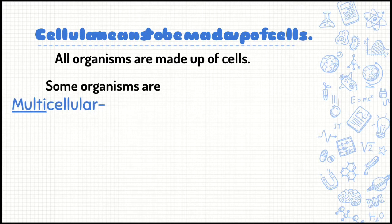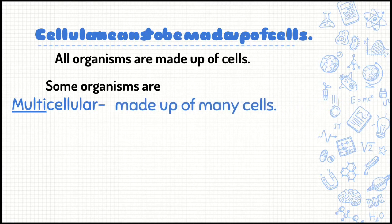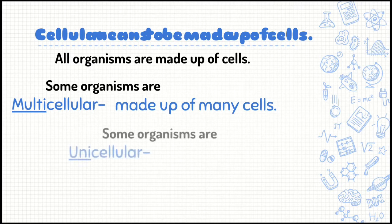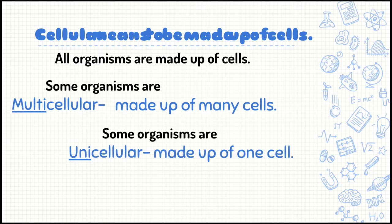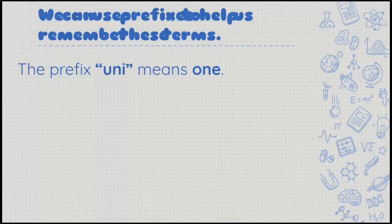All organisms are made up of cells. Some organisms are multicellular — this means they're made up of many cells. Multi means many, or more than one. And some organisms are unicellular. The prefix uni means one — they're made up of one cell.